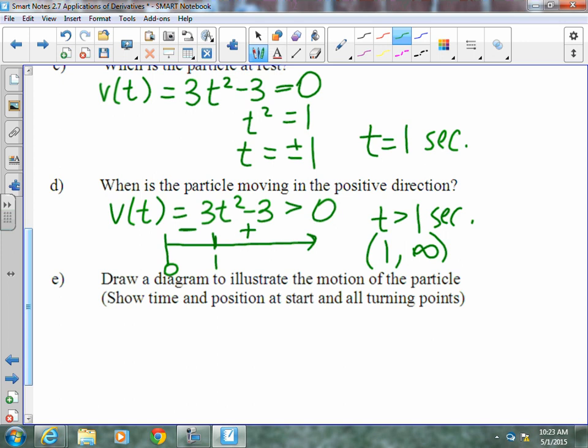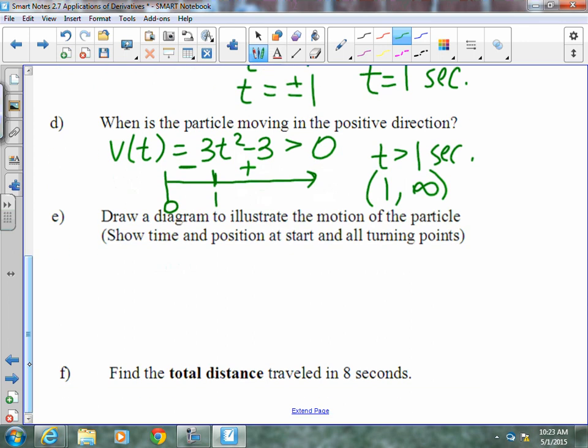E said draw a diagram to illustrate the motion of the particle. To do this, we need to take into consideration some time that we know. First of all, we need to know where it started, and we need to know where it was when it changed direction, because this particle moves left for the first second and then it turns and moves right for the remainder of its course.